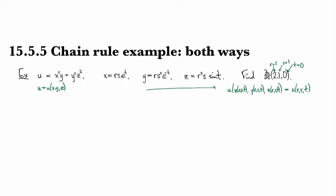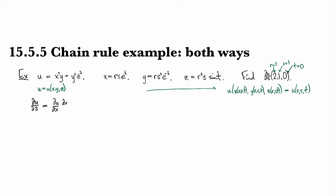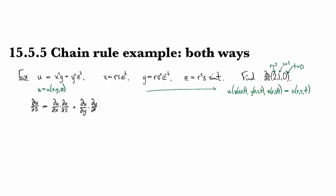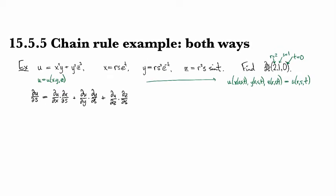Okay, now let's go ahead and start crunching. So buckle up, here we go. So the partial of u with respect to s is going to be du/dx times dx/ds plus du/dy times dy/ds plus du/dz times dz/ds. And so now we're going to need to compute all of those components and stick them together.